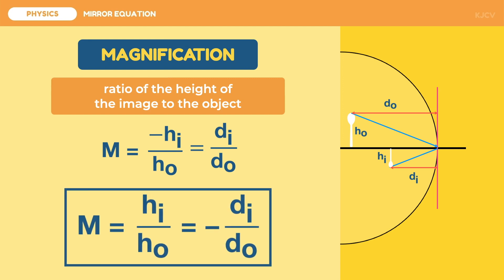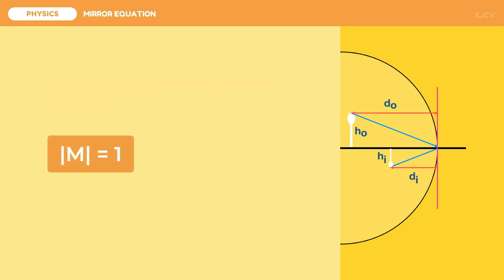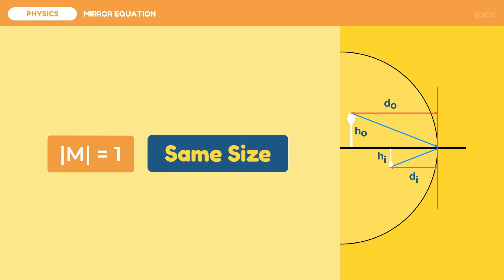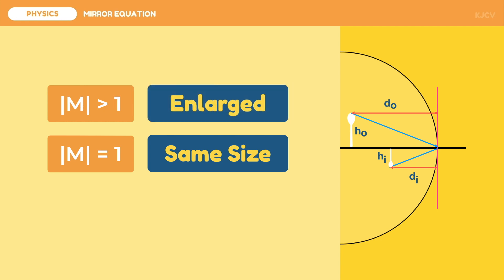How do we know if the image is enlarged, same-sized, or reduced by just looking at the magnification value? We need to remember some rules. The magnification may be negative, but that does not mean the image is reduced — the negative sign indicates the orientation of the image. For the size, we look at the absolute value of the magnification in a base-1 comparison. If the absolute value equals 1, the image is the same size as the object. If it is greater than 1, the image is larger. And if it is less than 1, the image is smaller than the object.